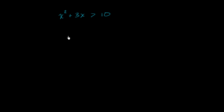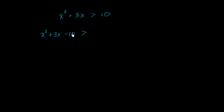The first thing that we might want to do, just to get into a form that we're more comfortable with, is subtract 10 from both sides. If we subtract 10 from both sides, then on the left-hand side we're going to have x squared plus 3x minus 10. If we add or subtract the same thing to both sides, it won't change the inequality — it's now going to be greater than 0.